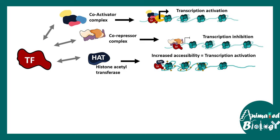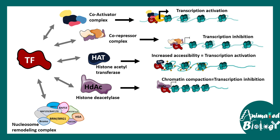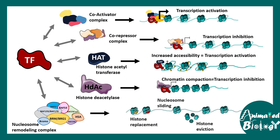This increases the chance of transcription. Interaction with histone deacetylases deacetylates particular nucleosomes, leading to chromatin compaction and inhibition of transcription. Nucleosome remodeling complexes can interact with the overall chromatin in several ways. Transcription factors work hand in hand with these nucleosome remodeling complexes, leading to replacement of specific histones, sliding of specific nucleosomes, freeing up new spaces, and eviction of histones — kicking them out and making the road free for transcription factors or RNA polymerase.